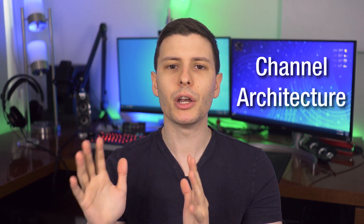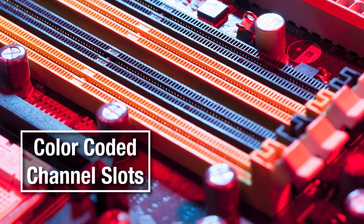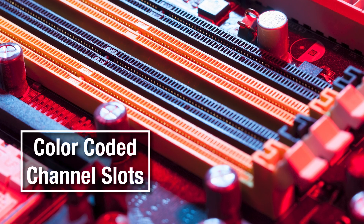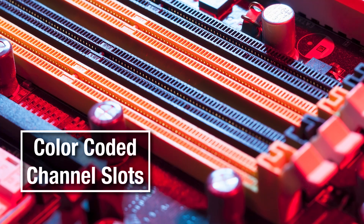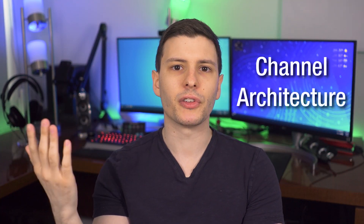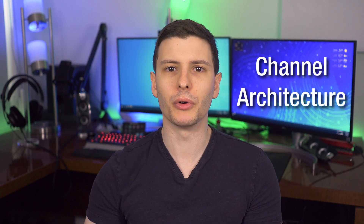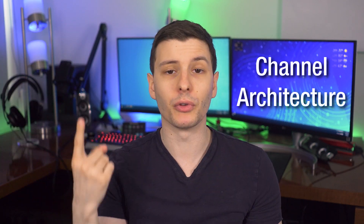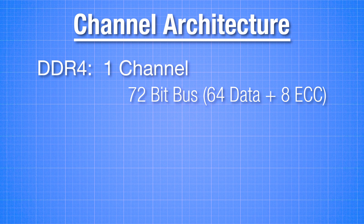The next major difference between the two generations is the channel architecture. You may know that you can get dual channel RAM or quad channel RAM with different slots in the motherboard. This basically makes it so the CPU can access different pieces of data within each channel, whereas with just one channel the CPU can basically only get one piece of data at a time — kind of like having multiple cores in a CPU. Each DDR4 module has just one channel per stick, made up of 72 bits total: 64 data bits and 8 bits for error correcting.